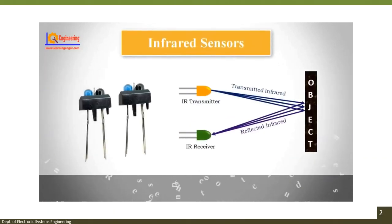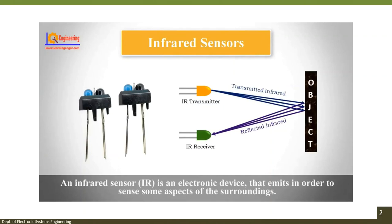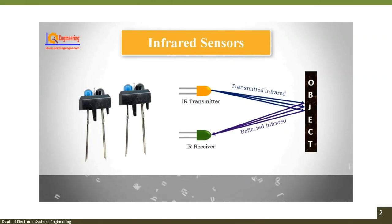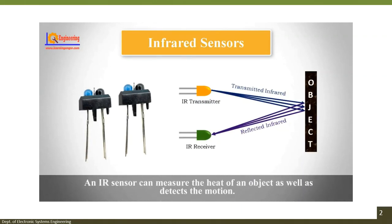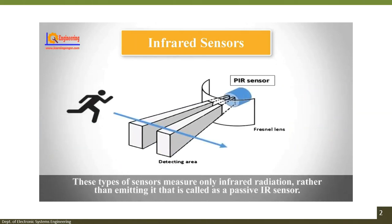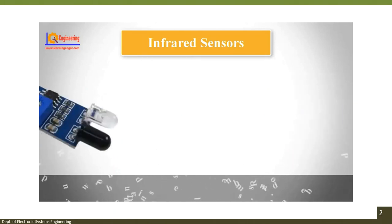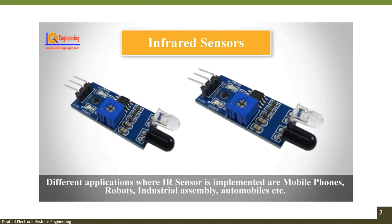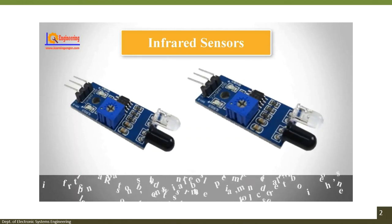An infrared (IR) sensor is an electronic device that emits in order to sense aspects of the surroundings. An IR sensor can measure the heat of an object as well as detect motion. Sensors that only measure infrared radiation without emitting are called passive IR sensors. Applications include mobile phones, robots, industrial assembly, and automobiles.